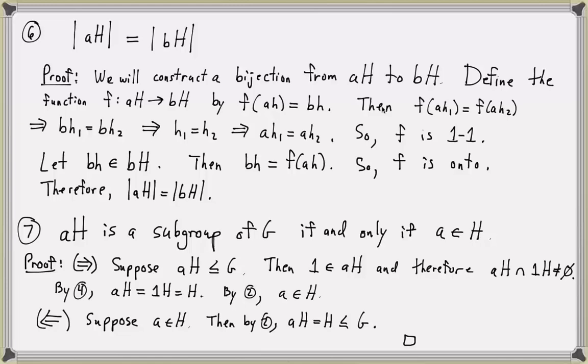This finishes the proofs of our seven properties. Several of these properties will be used to prove a very important theorem called Lagrange's theorem. Property 1 states that every element of G is in a left coset. Property 4 tells us that two left cosets are either identical or disjoint. Property 6 tells us that all cosets have the same size. Combining properties 1, 4, and 6, we can conclude that left cosets of a subgroup H partition a group G into blocks of equal size.